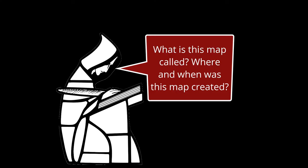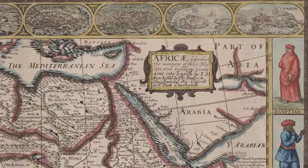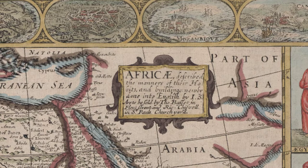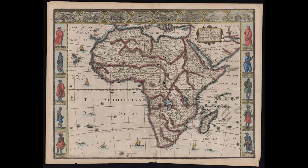Let's start with this map. It looks like this map has a title box, so I'm going to start there. This is 'Africae Described, the manage of their habits and buildings newly done in English by I.S., are to be sold by the Bassett and Fleet Street and Richard Chiswell in St. Paul's Churchyard.' This tells me the title and the locations of the shops, which makes me think this was created in London. I don't see any dates or full author name besides I.S., but I could try to use the shop names to come up with a tentative date of when they were active.